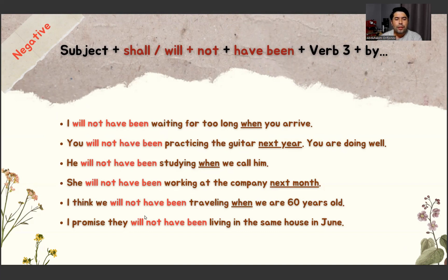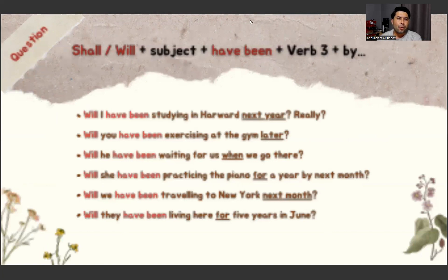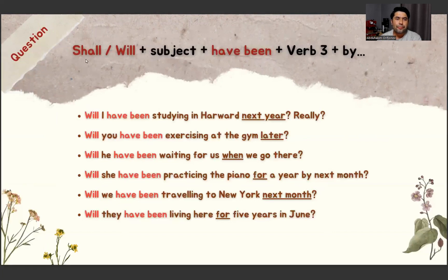I think we will not have been traveling when we are 60 years old, I promise. They will not have been living in the same house in June. Question sentence structure: shall or will + subject + have been + verb 3 + time expressions.